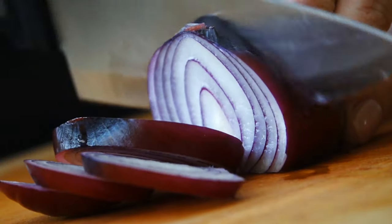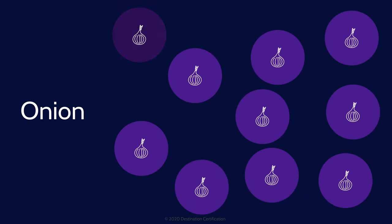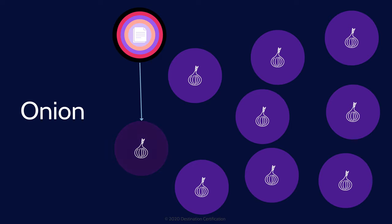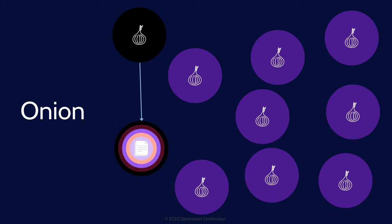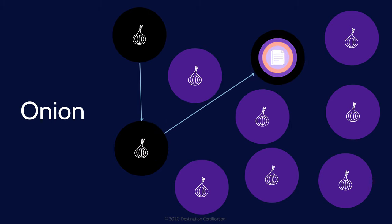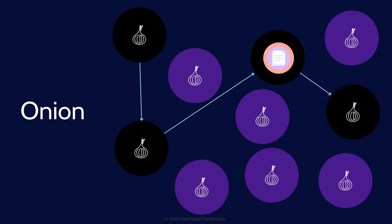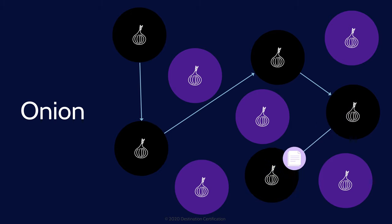Onion networks provide confidentiality of the data and anonymity, making it very difficult to determine who the sender and receiver are while data is in transit. The sender pre-determines a series of nodes the packet will pass through, then encrypts the entire packet multiple times — each layer using the encryption key of a specific node. When sent, the first node decrypts the outermost layer, revealing the next node; that node strips off the next layer, revealing the next hop, and so on, until the packet finally reaches the destination, which decrypts the innermost data.